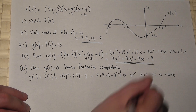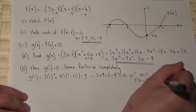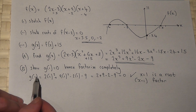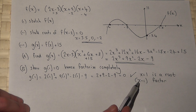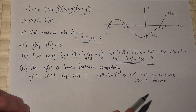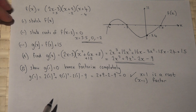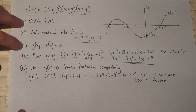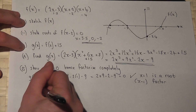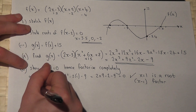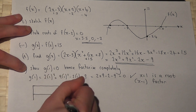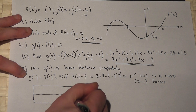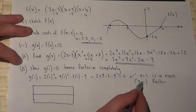So that means x minus 1 is a factor. To factorise this I must divide g of x by x minus 1 to find the other factors. To do this we use polynomial division. I do this using the grid method in reverse, so my factor is x minus 1.